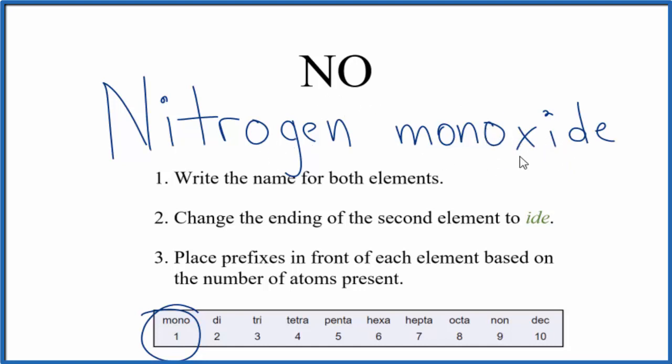And note again, we put the mono in front of the second element, but we wouldn't put it in front of the first. But this is maybe a more formal name for nitrogen monoxide. You should, however, remember NO, nitric oxide, more common name.